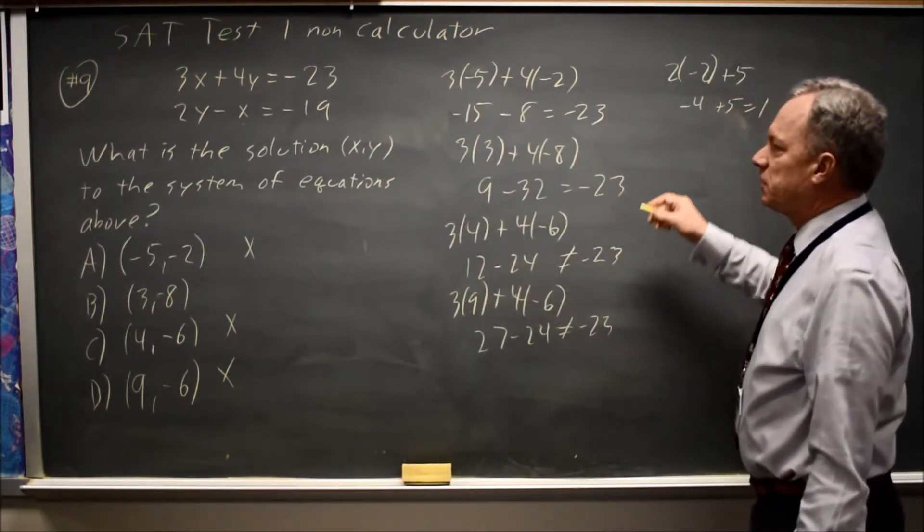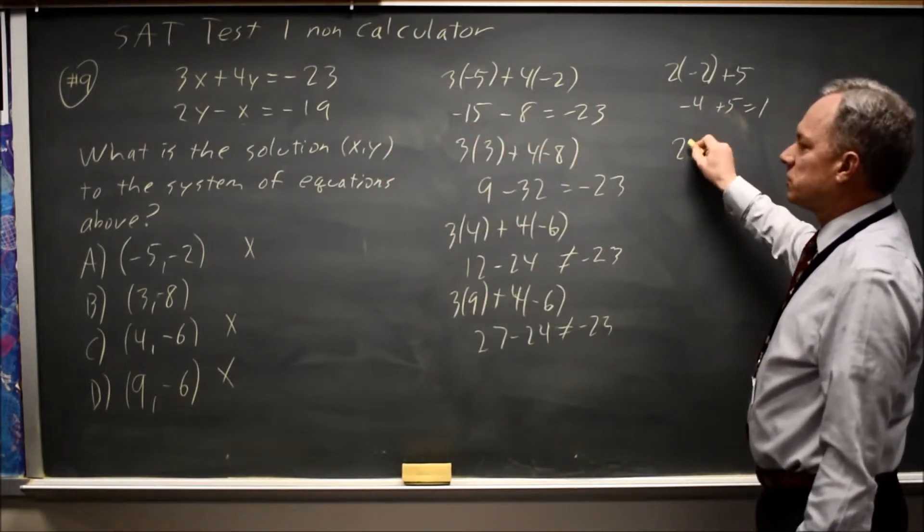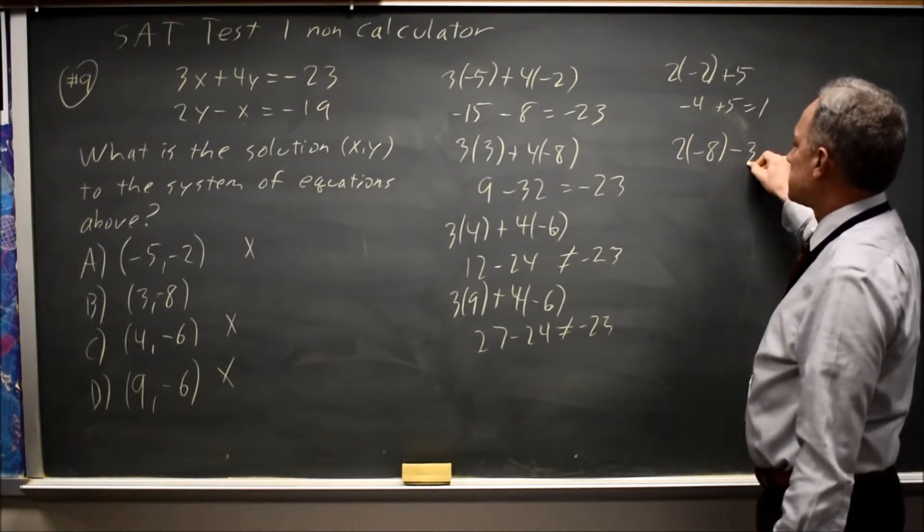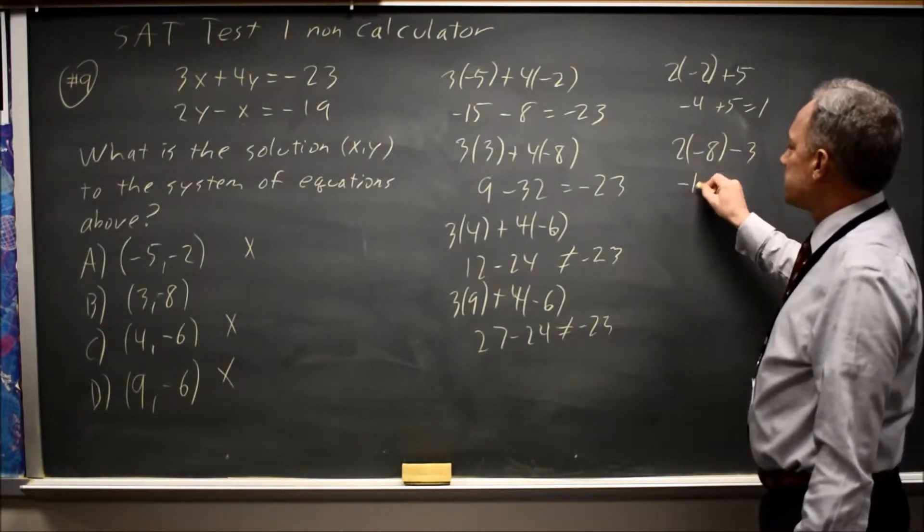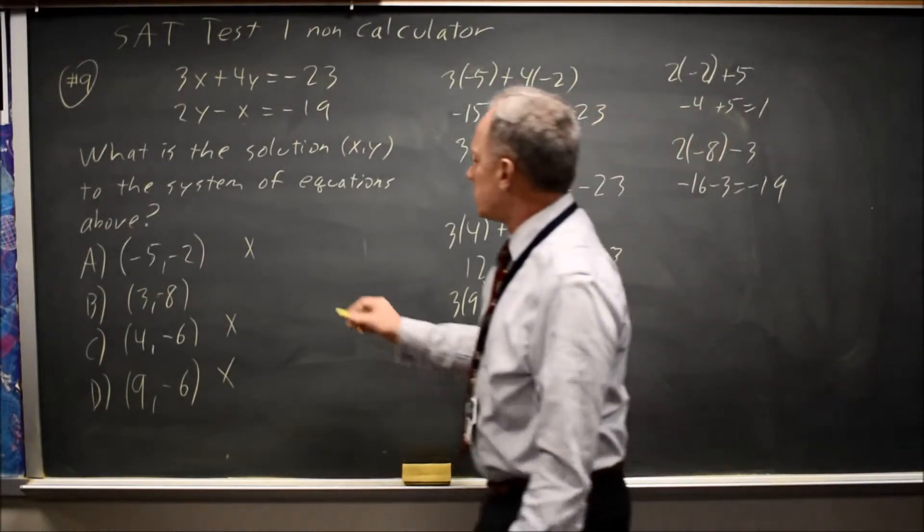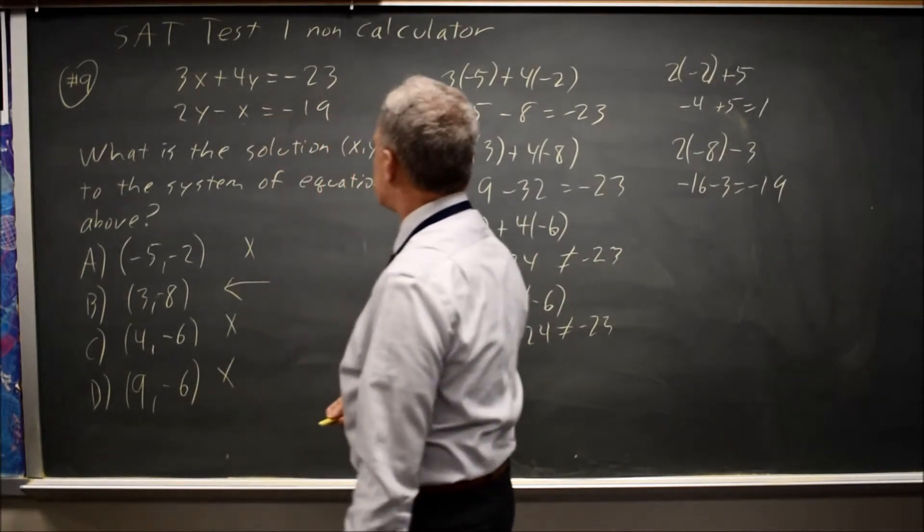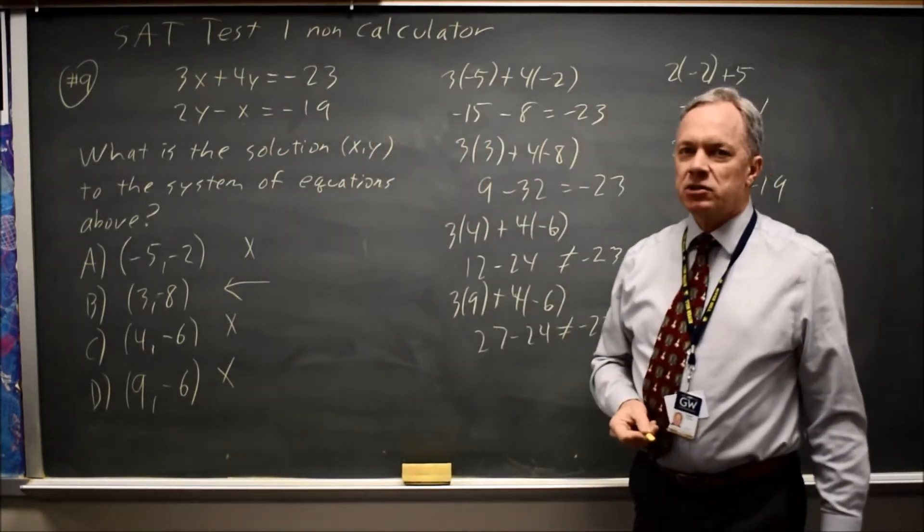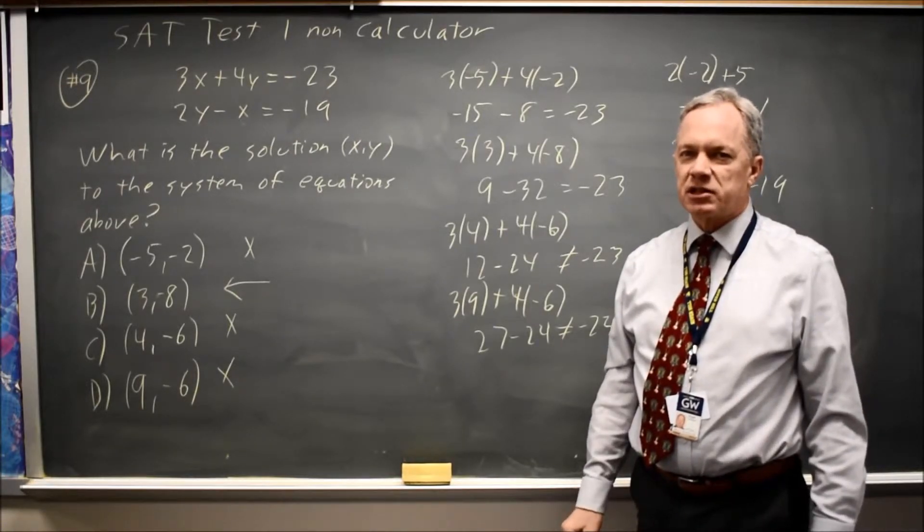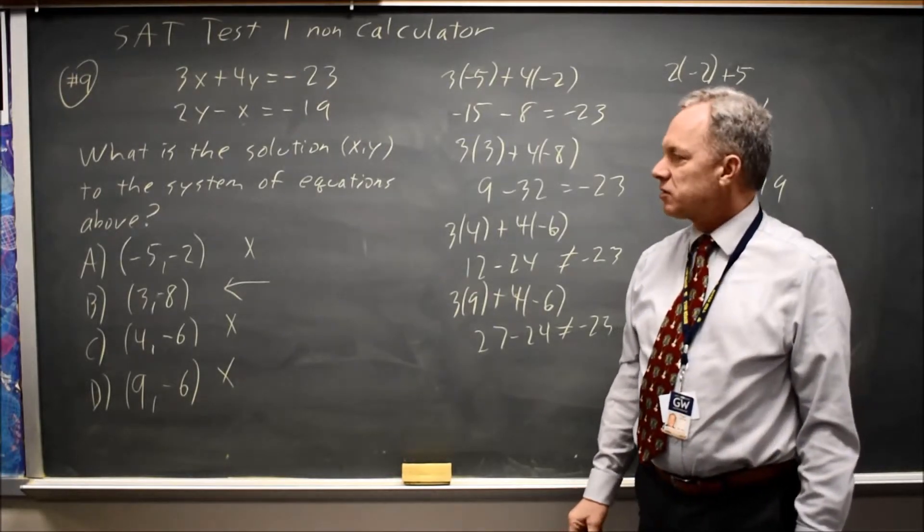How about choice B in equation 2? Twice y is twice negative 8 minus x is minus 3. Negative 16 minus 3 equals negative 19. Choice B worked. The other three choices did not. Certainly when they give you the x and y coordinates, the fastest way is often to substitute those values in each equation.